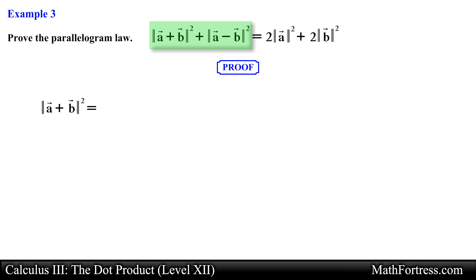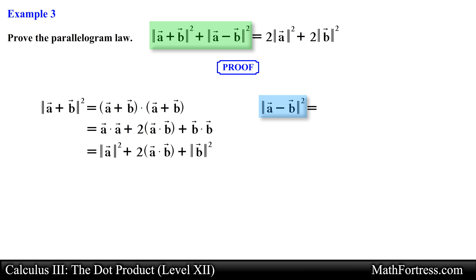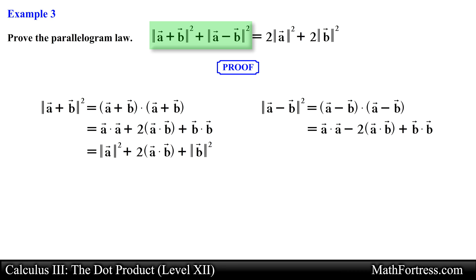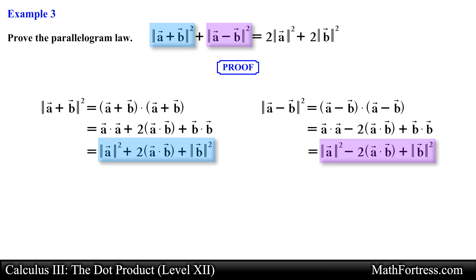Let's rewrite the square of the magnitude of vector A plus vector B into its dot product representation. Then we use the distributive property for dot products. Next we rewrite vector A dotted with vector A and vector B dotted with vector B as the magnitude of vector A squared and the magnitude of vector B squared respectively. We essentially carry out the same process with the square of the magnitude of vector A minus vector B, rewriting it into dot product form and applying the distributive property, then rewriting the squared terms.